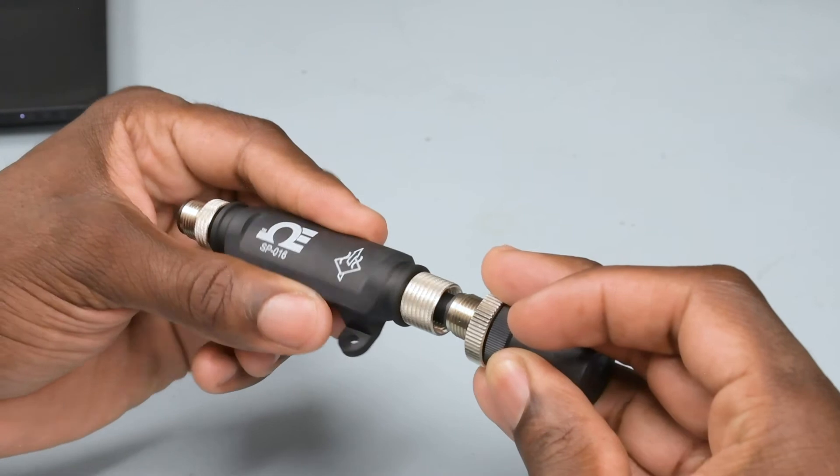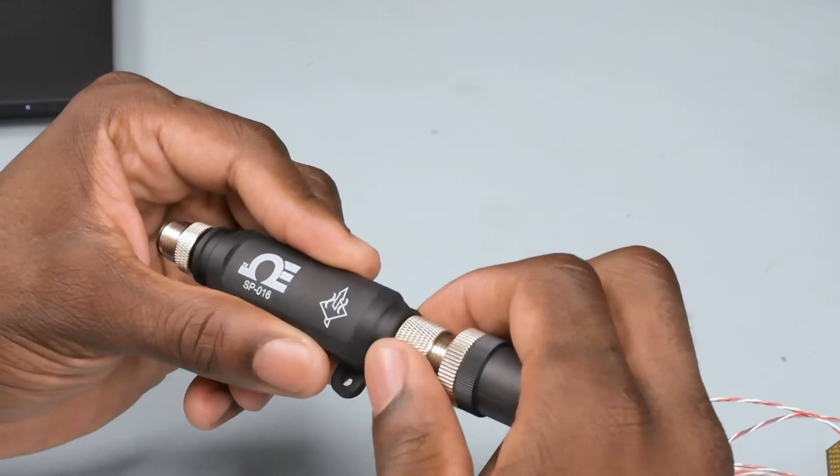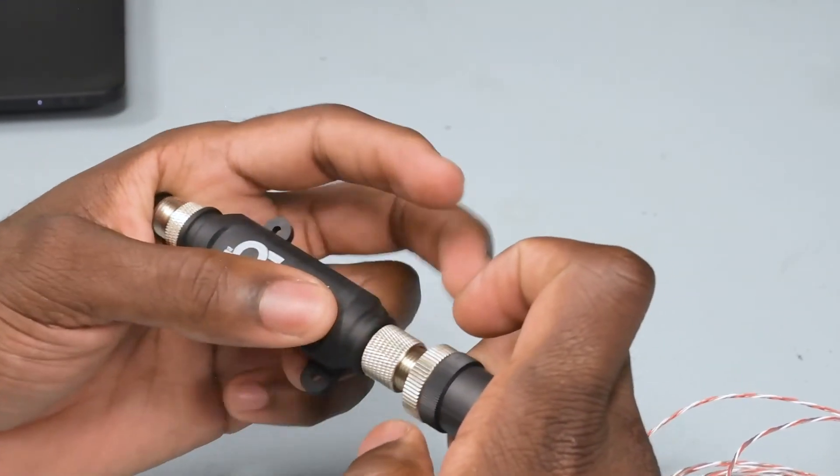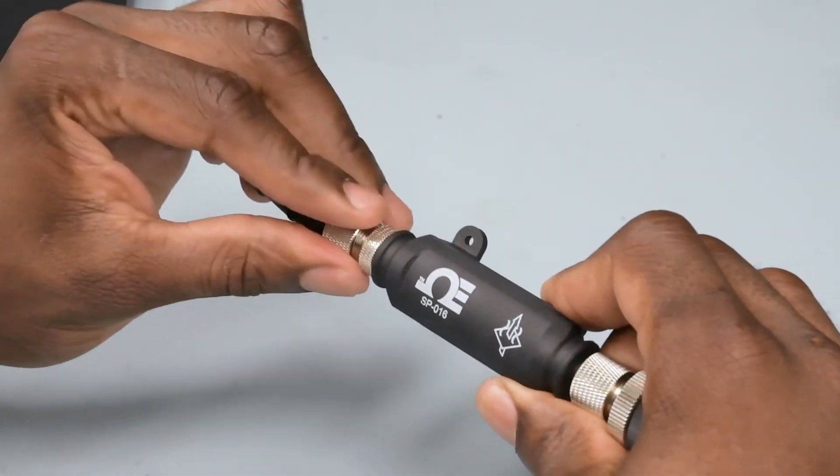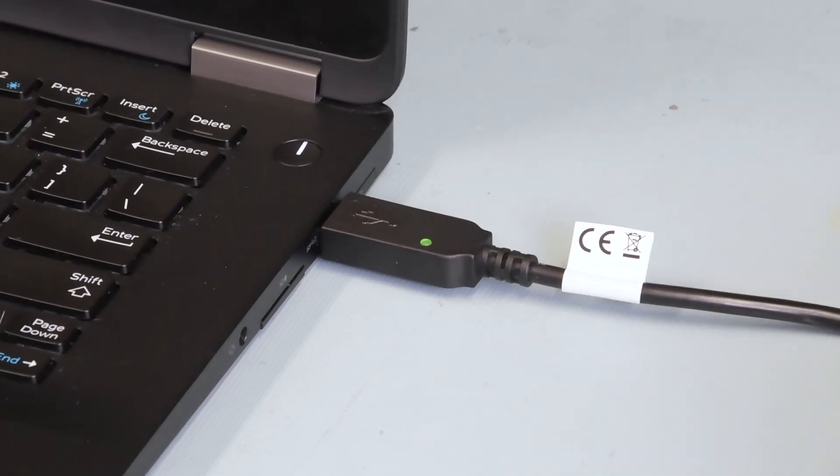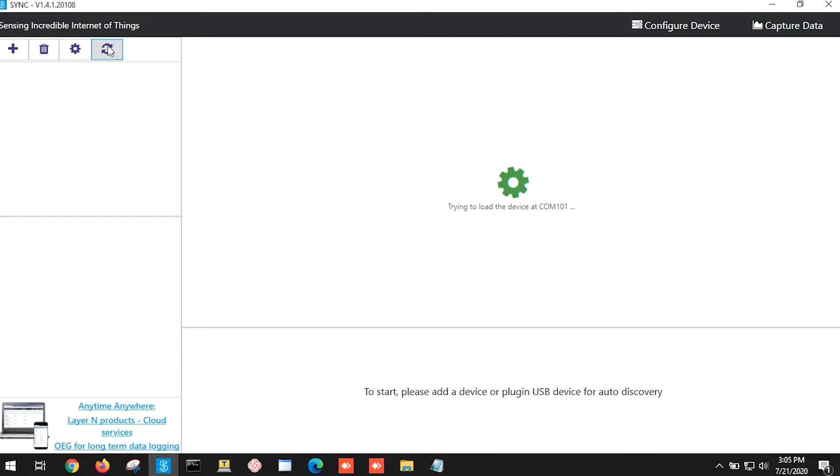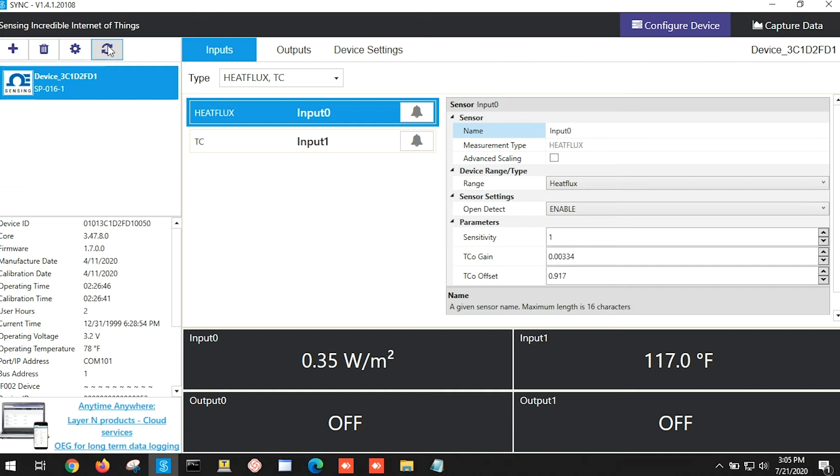Now we can connect our heat flux sensor to the 4-pin M12 connector on the SP016 smart probe. And we'll run the USB interface from the smart probe to our Windows laptop with our sync software already up and running. Once the SP016 is connected to the computer, sync will automatically detect it and start displaying temperature reads.